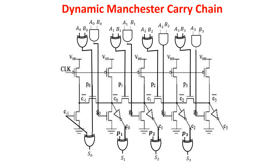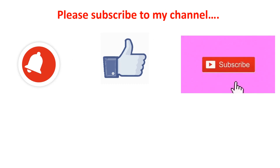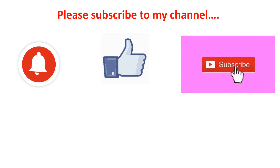Here you see the conventional 4-bit dynamic Manchester Carry Chain. As previously mentioned, due to technological constraints, the length of the carry chain is better limited to 4 bits. Of course, by connecting blocks of 4 bits we can have an 8-bit adder, or an adder with any multiple of 4 bits. Please leave a comment and let me know if you liked this video. Make sure you put the thumbs up, click the notification bell, and subscribe to my channel.